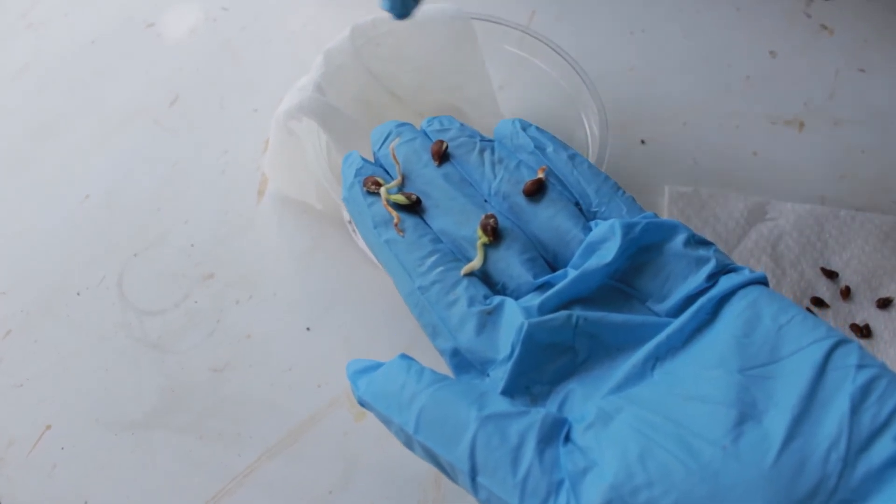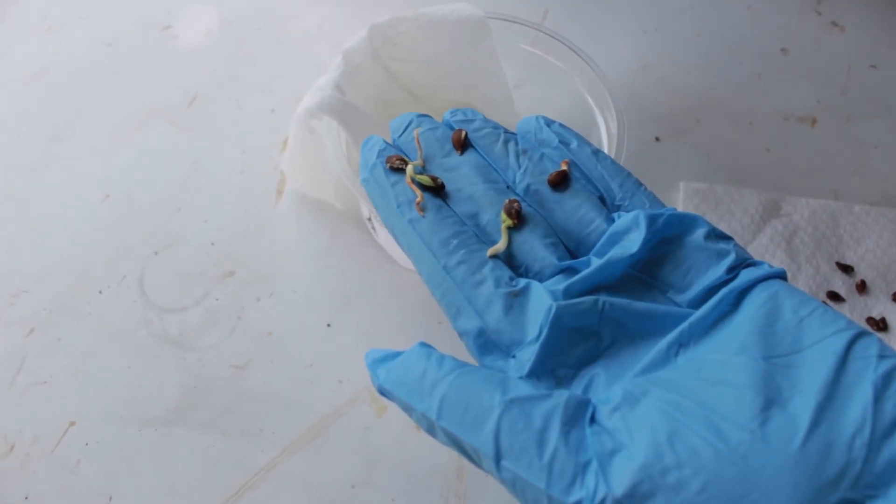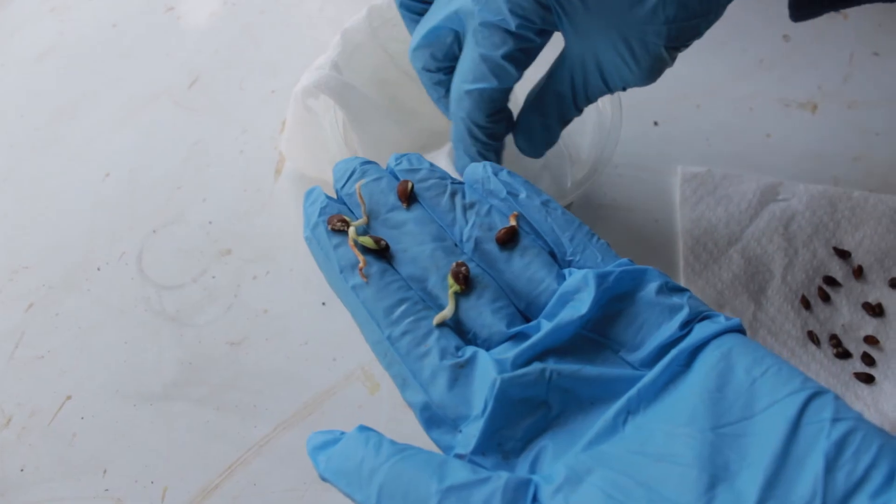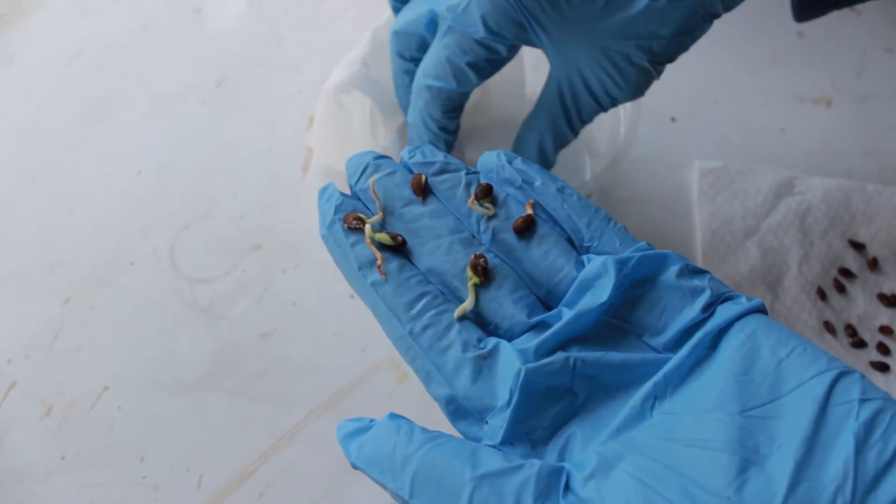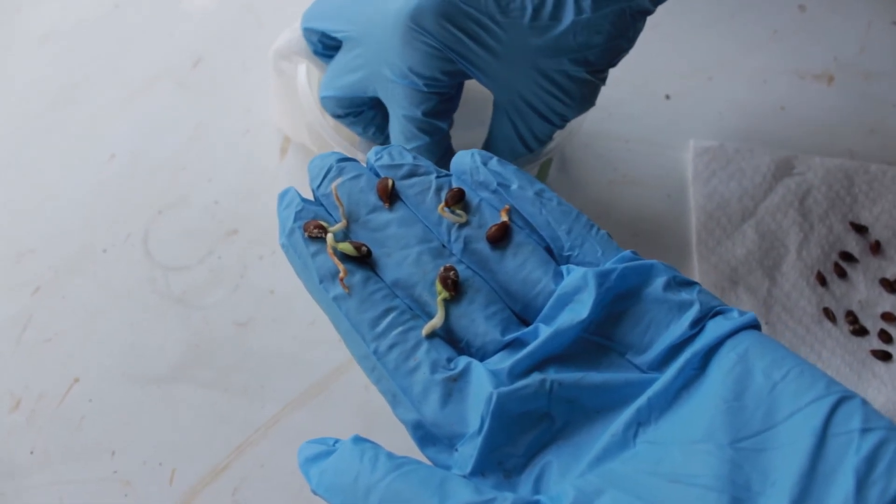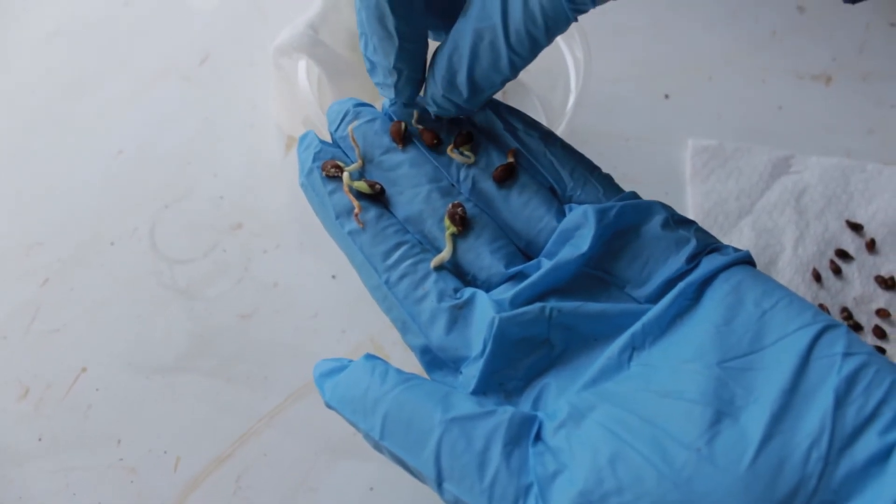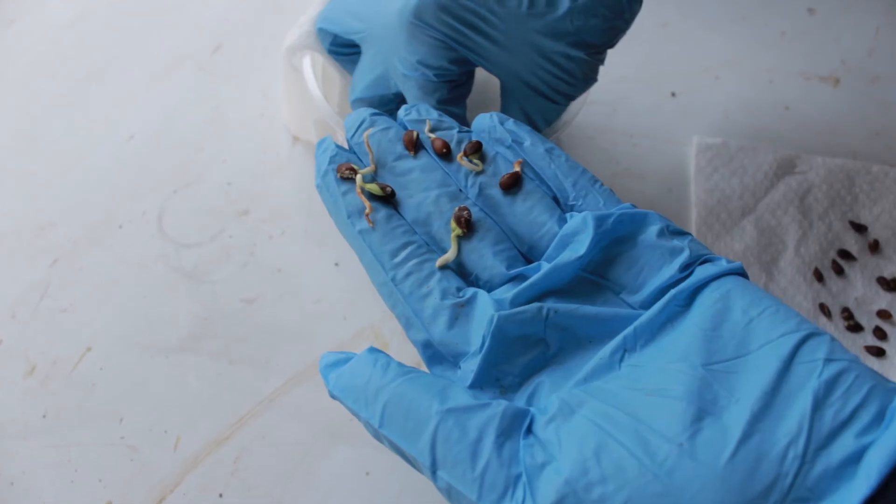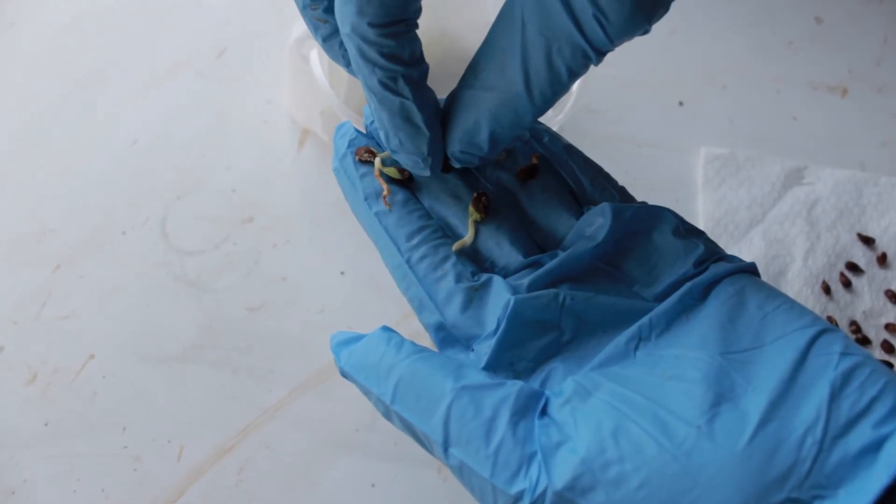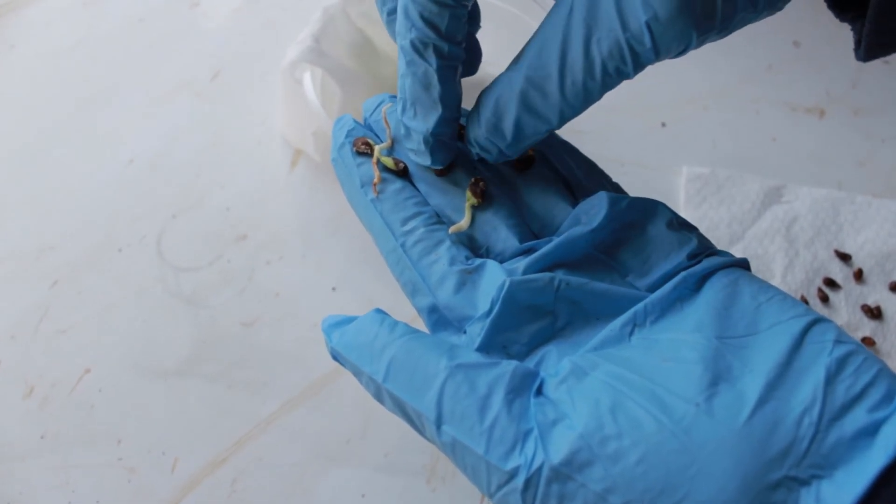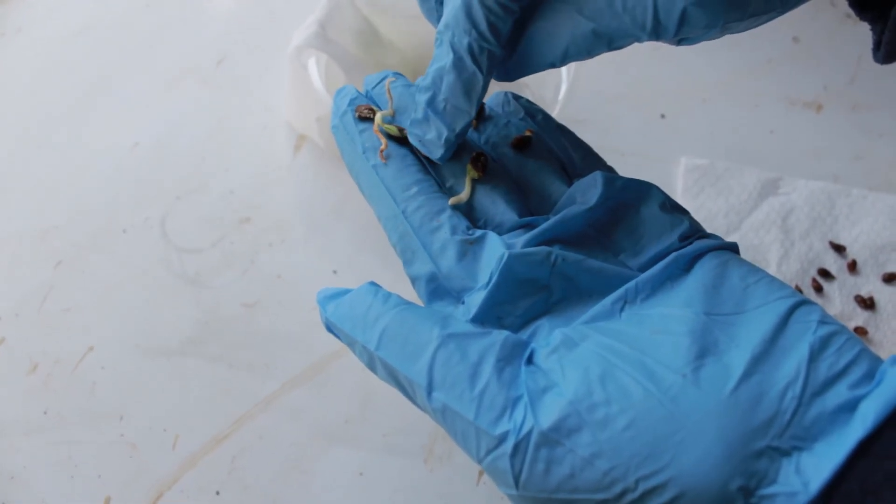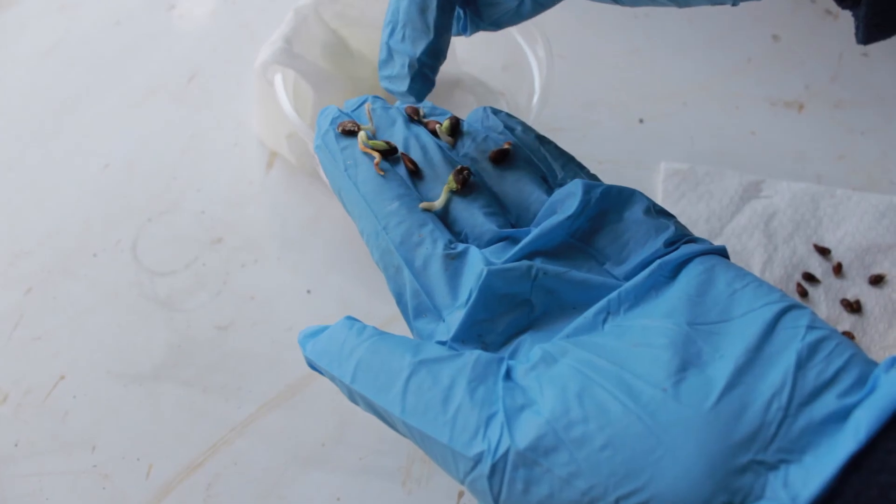Some people say that you have to peel it off. I say don't peel anything off. In nature, they work it off and they sprout without peeling the seed off. This one is also trying but it didn't get there yet. Here you can see how it starts. It cracked already, so at least it has life in it.